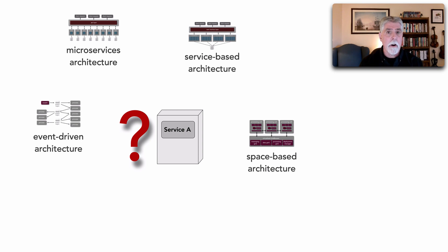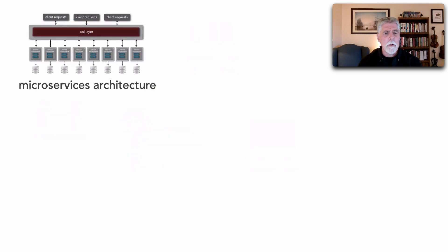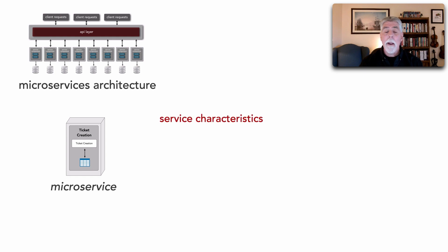Let's start with microservices architecture. Services here are called a microservice, and the characteristics are that they are single purpose functions, which means they're usually fine-grained. That's where the word 'micro' in microservice gets its name. It's not about the physical size of the service but rather what it does.